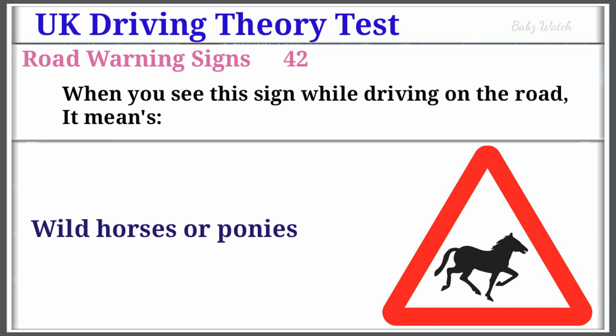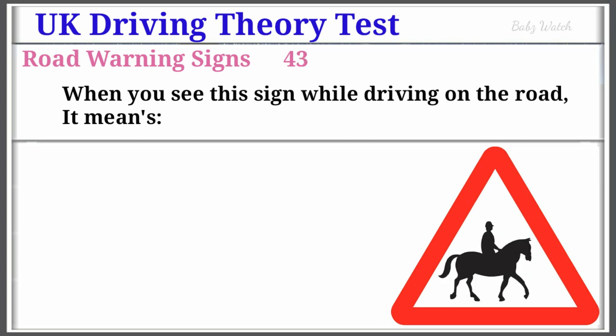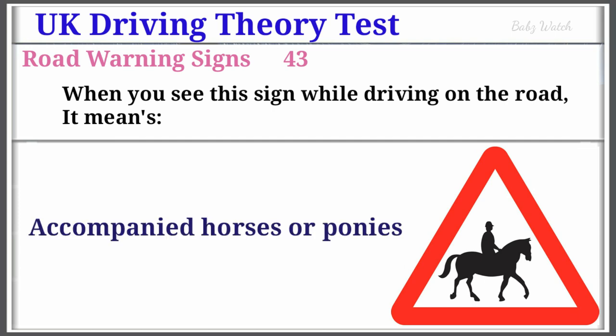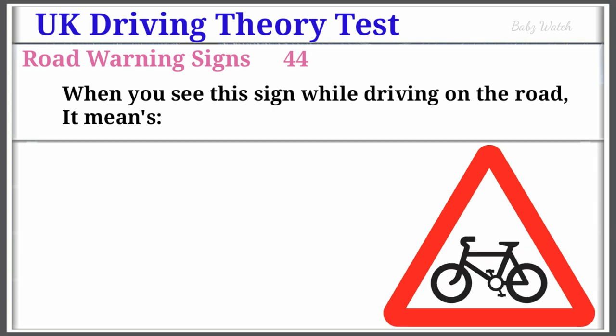UK Driving Theory Test Road Warning Sign Number 43: When you see this sign while driving on the road, it means Accompanied Horses or Ponies. Warning Sign Number 44: When you see this sign while driving on the road, it means Cycle Route Ahead.